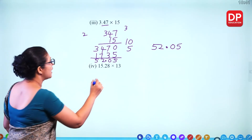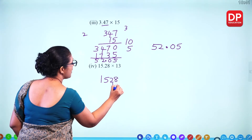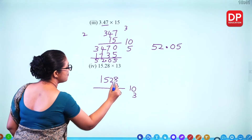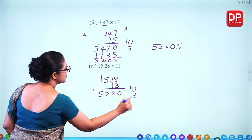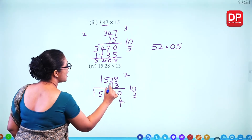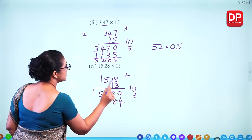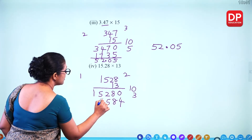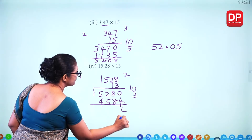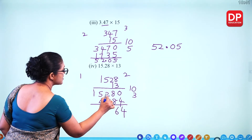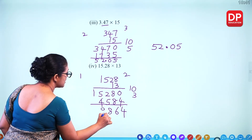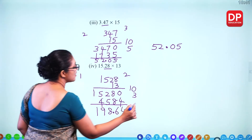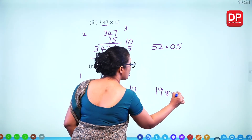For 3.47 times 15: 347 multiplied by 15. Split into 10 and 5. 5 times 7 is 35, 5 times 4 plus 3 is 23, 5 times 3 plus 2 is 17. Add results together to get 5205. With 2 decimal places, the answer is 52.05. For 15.28 times 13: 1528 multiplied by 13. 3 times 8 is 24, 3 times 2 plus 2 is 8, 3 times 5 is 15 (1 remaining), 3 times 1 plus 1 is 4 — giving 4584. With 2 decimal places, the answer is 198.64.